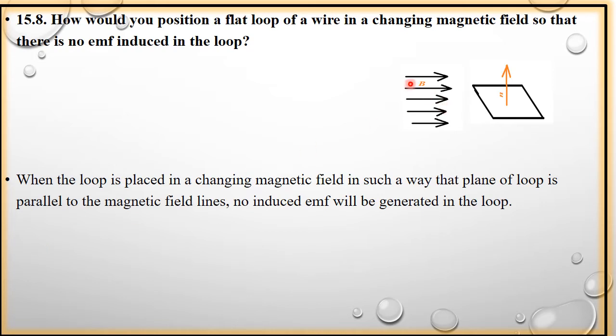Ab students, EMF induced hoti hai by rate of change of flux. Okay? Ab agar hum apni flat loop ko rakhtay hain kuch is position mein, parallel to magnetic field rakhenge. Toh jab flat loop parallel to magnetic field padi ho, toh yahan se number of magnetic field lines pass hi nahi hongi. Yaani, flux kya hoga? Zero hoga. Yeh aapne flux wale topic mein in detail padha tha. Toh jab plane of loop is parallel to magnetic field,